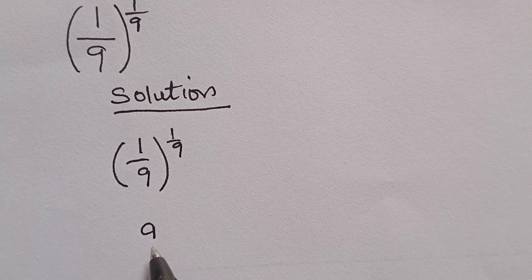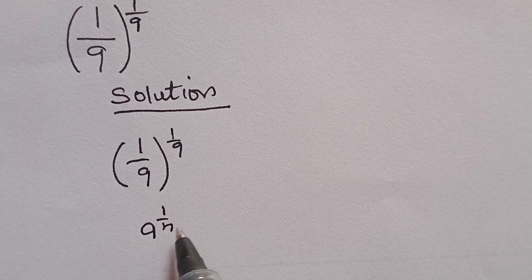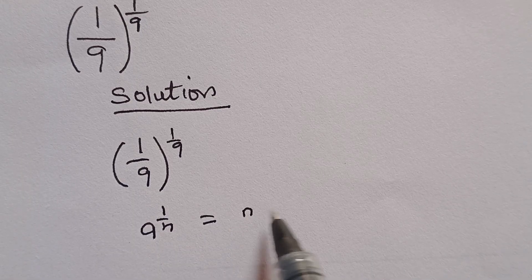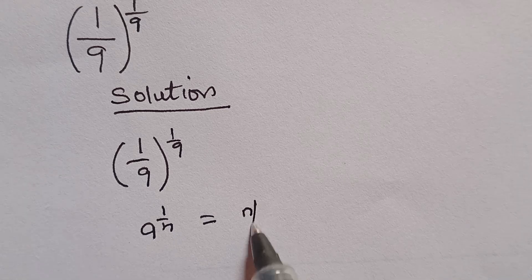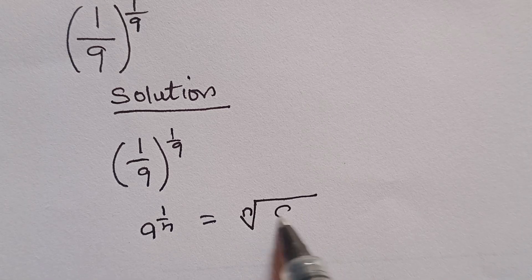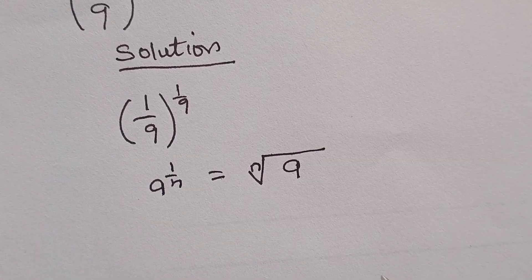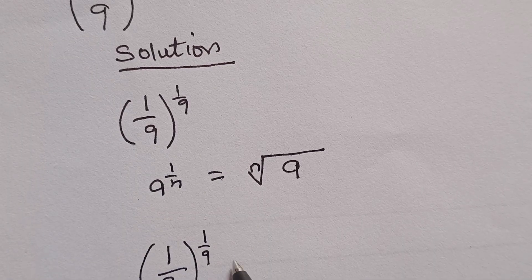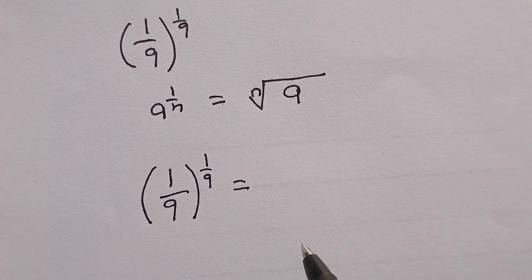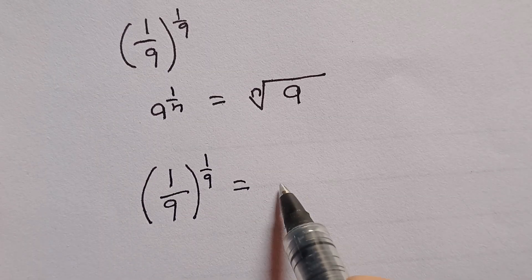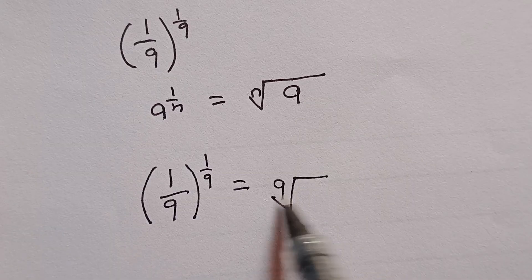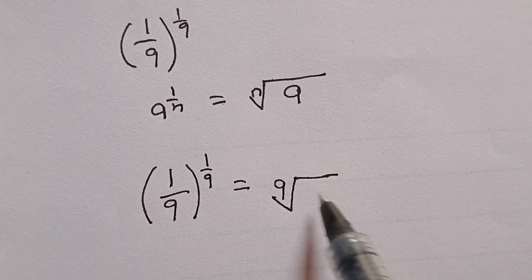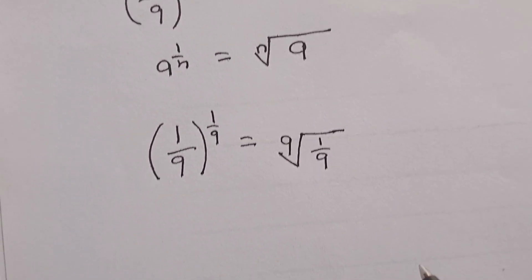Don't forget, if you have a raised to the power 1 over n, that is equal to the nth root of a. Using this principle, we can easily move forward and write 1 over 9 to the power 1 over 9, to be equal to the 9th root of 1 divided by 9.